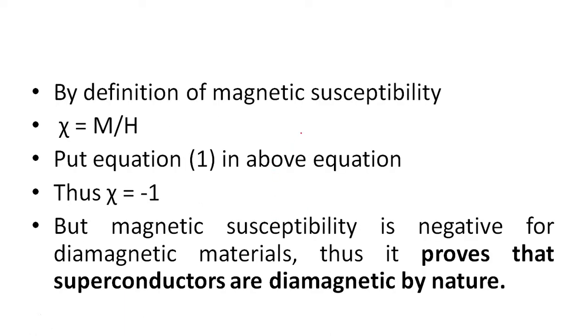By definition of magnetic susceptibility, it is the ratio of M to H. Now put equation number 1 in above equation. Thus, magnetic susceptibility equals minus 1. But magnetic susceptibility is negative for diamagnetic materials.